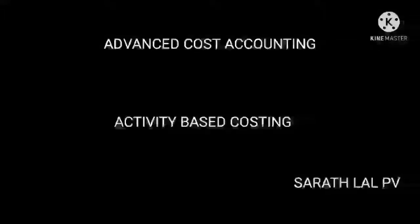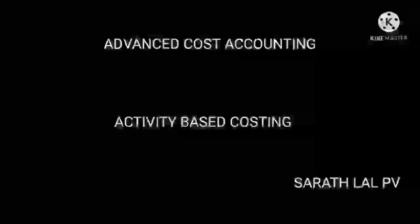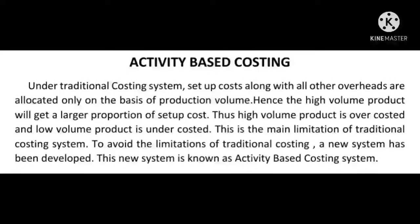Dear students, we will start the next chapter on Activity-Based Costing. Under the traditional costing system, setup costs along with all other overheads are allocated only on the basis of production volume. Hence, the high volume product will get a larger proportion of setup costs. Thus, high volume product is over-costed and low volume product is under-costed. This is the main limitation of the traditional costing system.